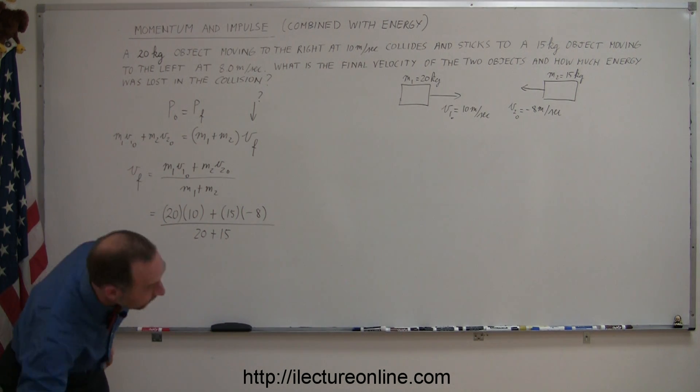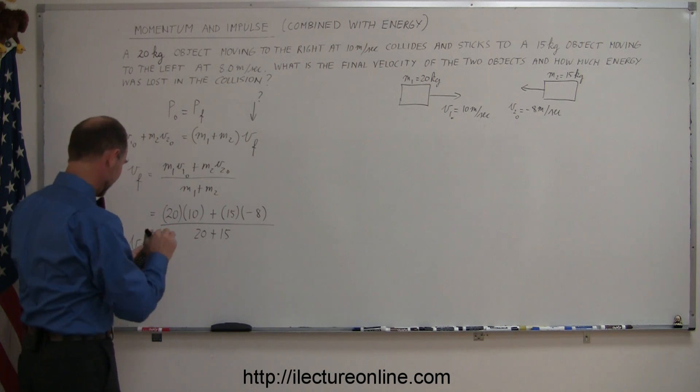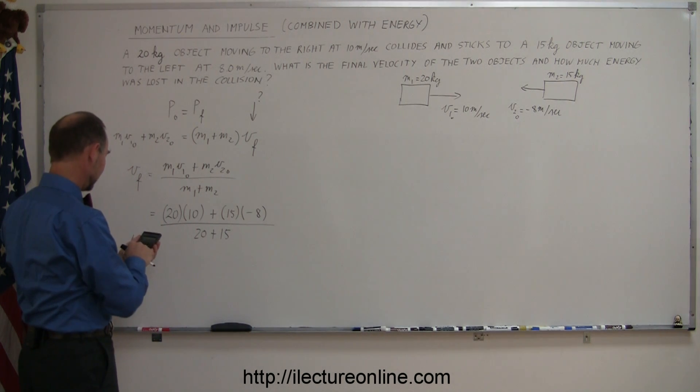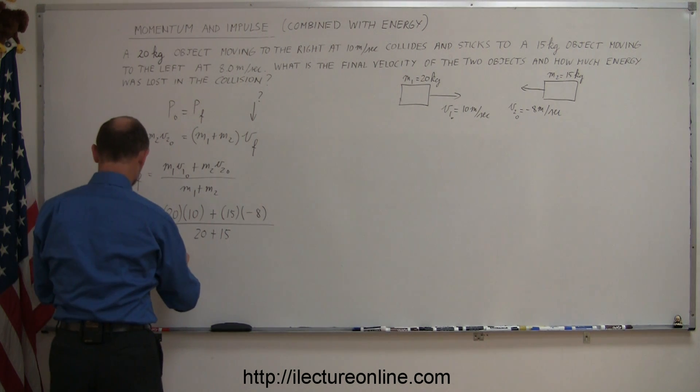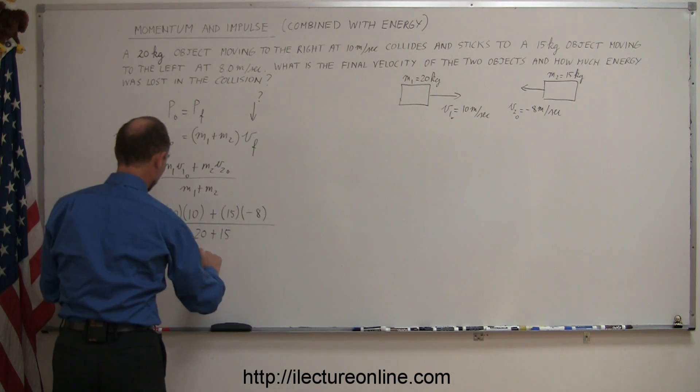So V final, let me get my calculator. Let's try this. So we have 200 minus 120, and divide by 35. And it turns out the final velocity is a positive 2.3 meters per second.